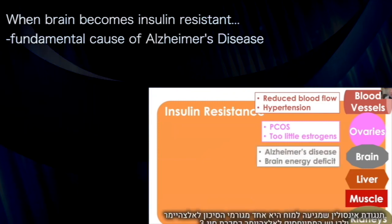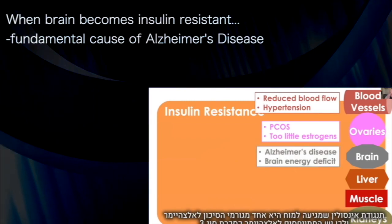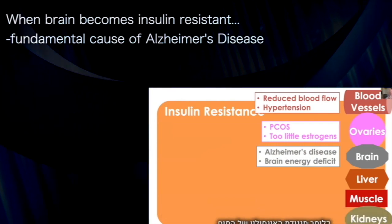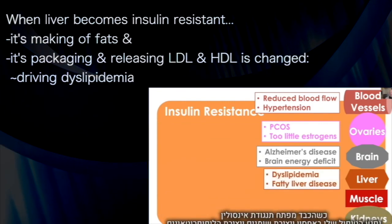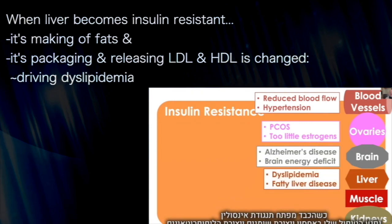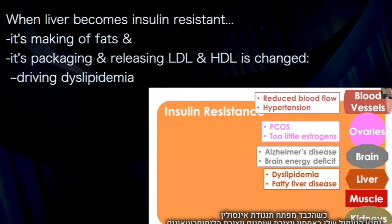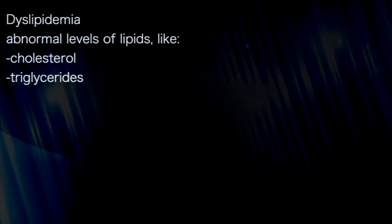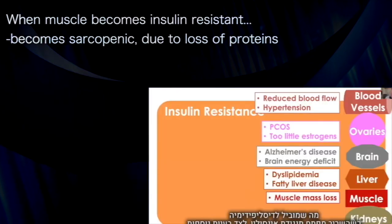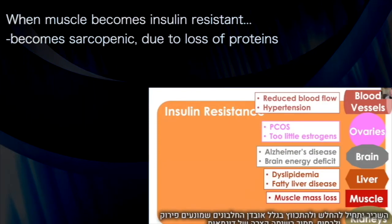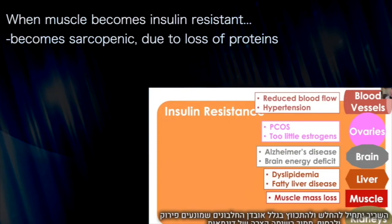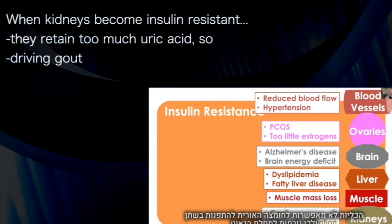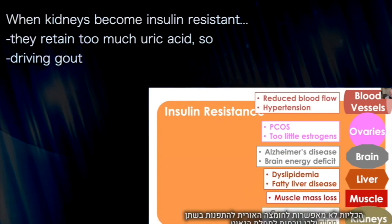When insulin resistance reaches the brain, that is thought to be a fundamental cause of Alzheimer's disease — to the point that some refer to Alzheimer's as type 3 diabetes, meaning insulin resistance of the brain. When the liver becomes insulin resistant, its handling of fats — what it makes, stores, and packages and releases as VLDL — and HDL metabolism change, driving dyslipidemia. When muscle becomes insulin resistant, the muscle will become sarcopenic due to loss of insulin's protection of muscle proteins. And the kidneys retain too much uric acid, driving gout.